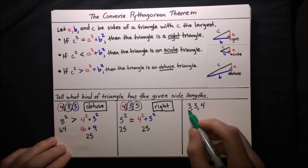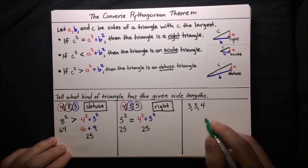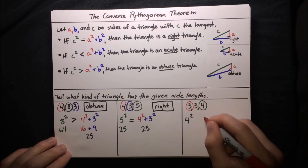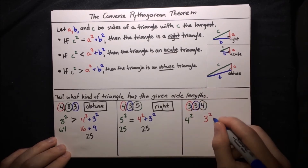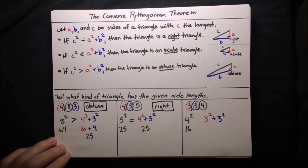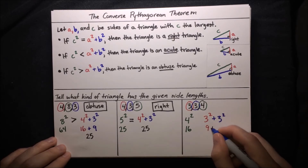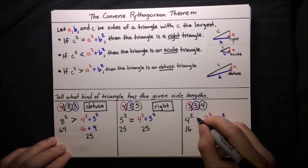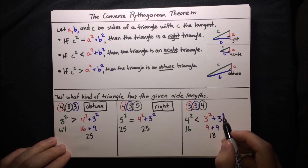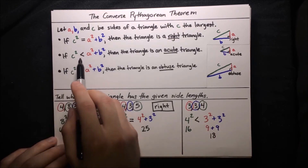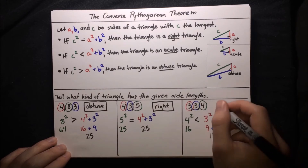Last one: side lengths 3, 3, and 4. The longest side is 4, so we compare 4 squared to 3 squared plus 3 squared. That's 16 versus 9 plus 9, which is 18. Since 16 is less than 18, we have 4 squared less than 3 squared plus 3 squared. The largest side is a bit too small to be a right triangle, corresponding to the case of an acute triangle. So it's acute.